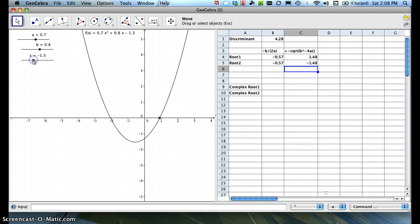I can vary C and watch and make sure it updates. That looks good. So we want to plot the second root. So we'll say parenthesis, B5 plus C5 comma 0, close the parentheses, enter, and we get our second point.